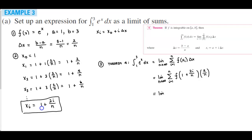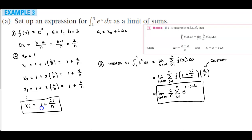We can factor out the constant 2 over n, giving us the limit as n approaches infinity of 2 over n times the summation from i equals 1 to n of e to the power of 1 plus 2i over n. That's how this integral is written as a limit of sums.